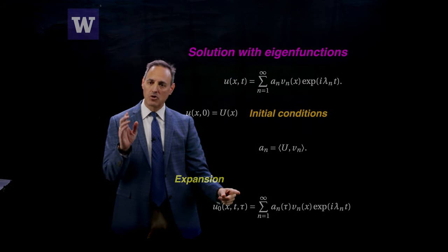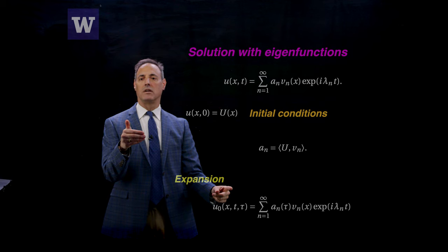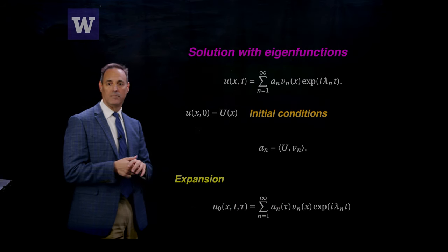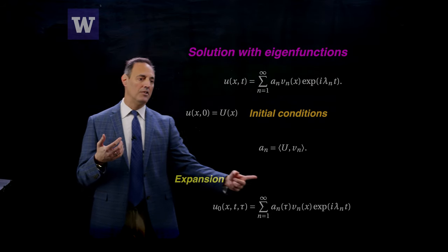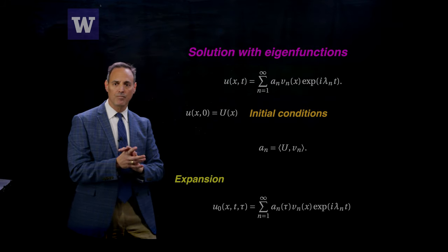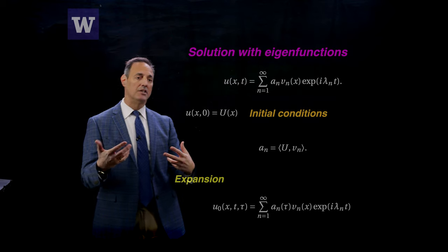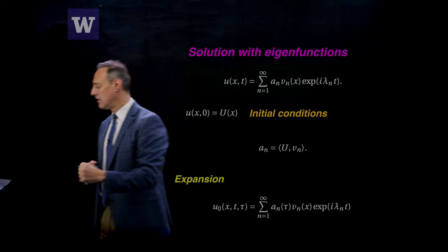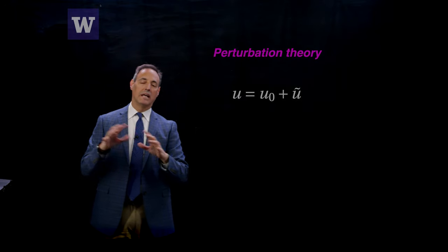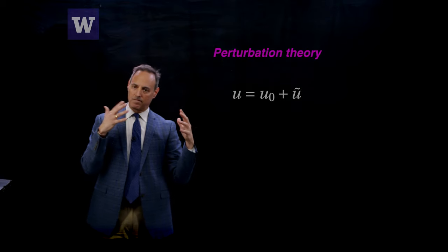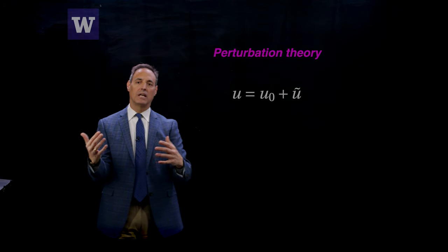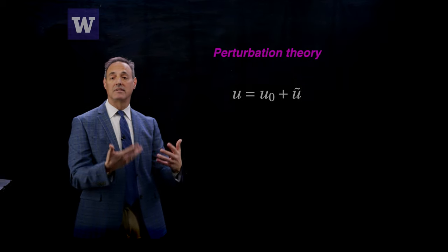What we've been doing with these pattern-forming systems is introducing slow space and time scales. Here I'll introduce slow time, and allow the a_n's to depend upon slow time tau = epsilon*t. So the coefficient at leading order for each eigenfunction is constant, but now I let it vary on slow time tau. That's what we introduce into the modal expansion: slow time evolution of the modal coefficients. Everything I've been doing in this pattern-forming set of lectures is really just introducing slow space-time scales and satisfying solvability conditions—that's the whole magic to it.